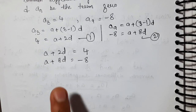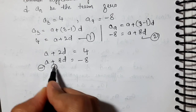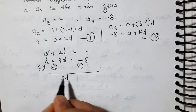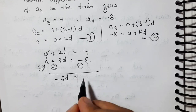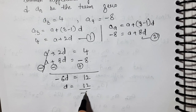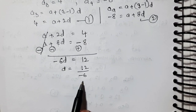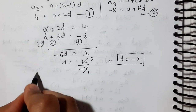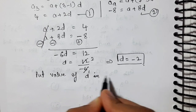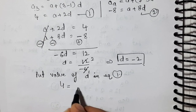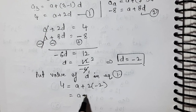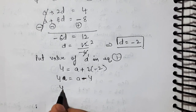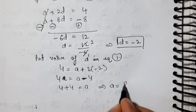Using the elimination method as before, we change signs. A − A = 0, and 2D − 8D gives −6D. On the right side, 4 + 8 = 12, so −6D = 12, meaning D = 12 ÷ (−6) = −2. Putting D = −2 into equation 1: 4 = A + 2 × (−2) = A − 4. So A = 4 + 4 = 8.